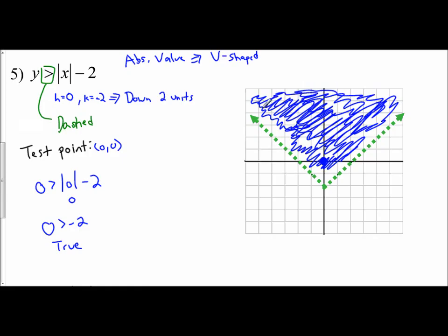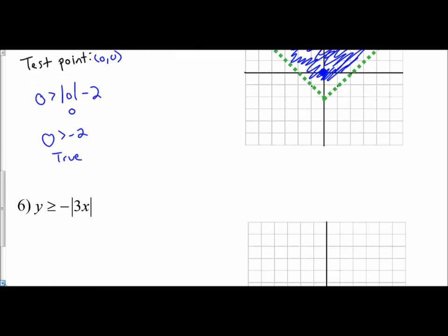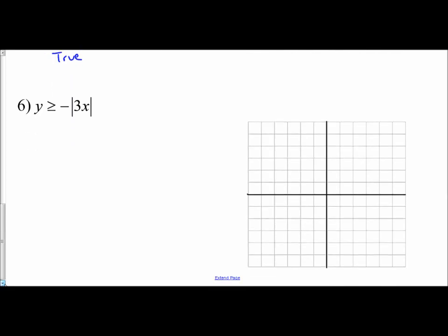So when you're graphing an absolute value inequality, use the idea of transformations, of translations to determine how to set up your graph. And then I would use the test point approach. So let's do the same idea for number 6. Y is greater than or equal to the negative of the absolute value of 3x. So remember how we can kind of do this one. It's negative, which remember, that means A is negative 1. So it reflects over the x-axis.